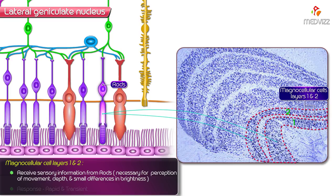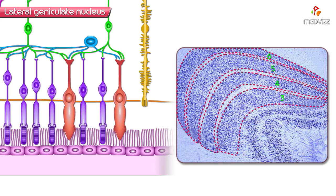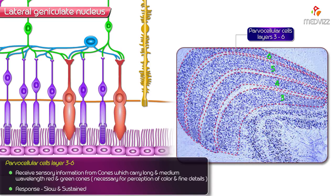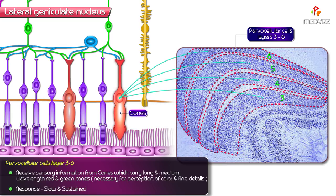The magnocellular layers 1 and 2 receive sensory information from rods, which are necessary for the perception of movement, depth, and small differences in brightness. Their response is very rapid and transient due to the larger cell size. The other 4 outer layers — layers 3 to 6 — consist of small to medium-sized, polar-staining cells called parvocellular cells, which receive sensory information from cones carrying long and medium wavelengths, that is red and green cones, necessary for the perception of color and fine details.